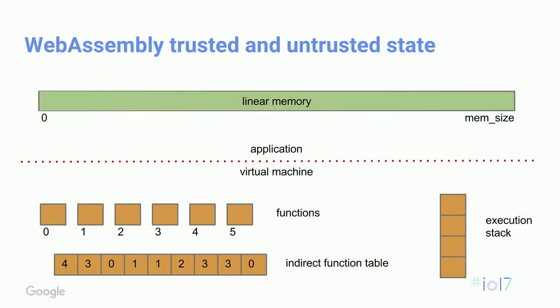The memory for a C++ program compiled into WebAssembly looks like a typed array to JavaScript — a contiguous block of memory with no holes. One key security feature is the execution stack, which is separate from the linear memory. In a normal C++ program, you have a heap and a stack growing toward each other — it's possible to take a pointer and look up into the stack memory and do nefarious things, a wonderful malware attack vector. But WebAssembly has a completely different model: the execution stack is isolated from the WebAssembly program itself, so there's no way to poke into it and change things.